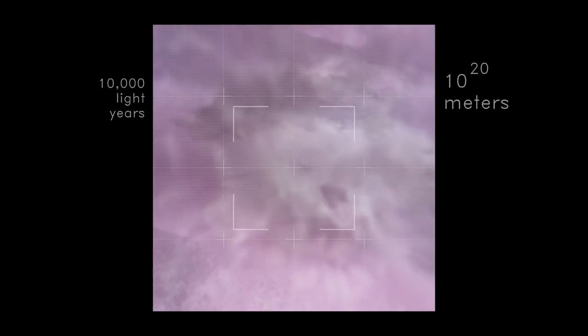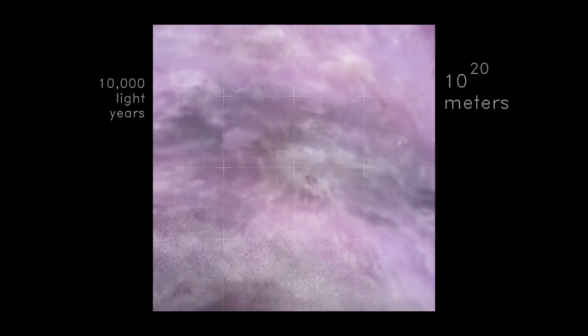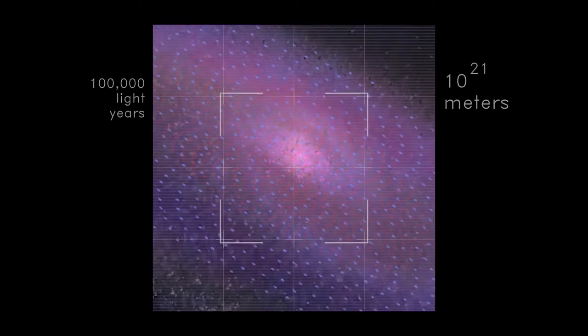Those two little satellite galaxies are the clouds of Magellan. 10 to the 22nd power, a million light years. Of course, other galaxies help orient us in otherwise endless space.